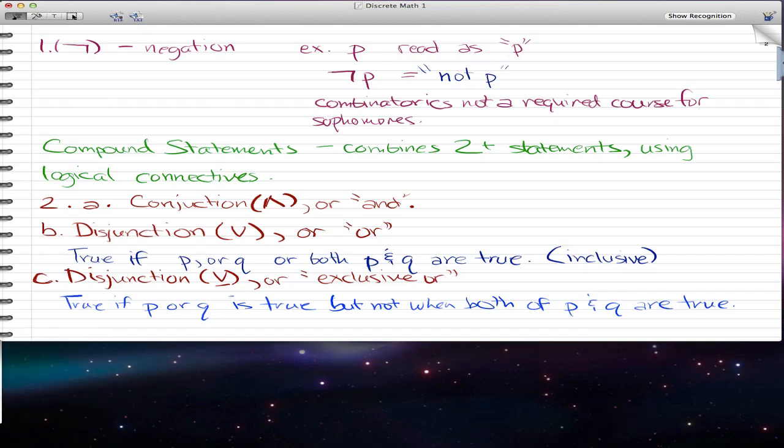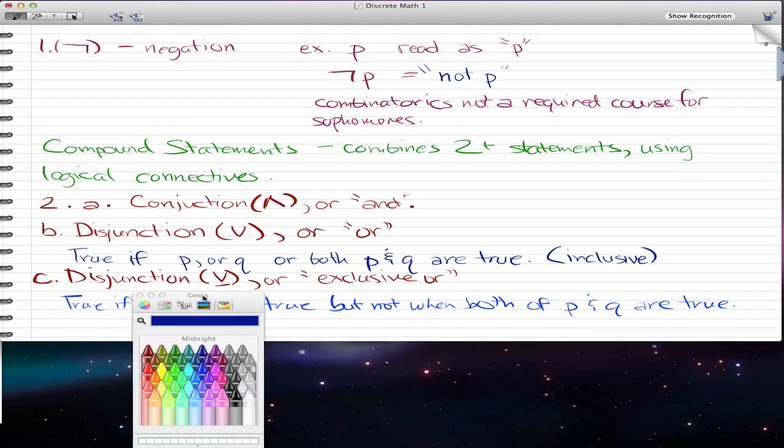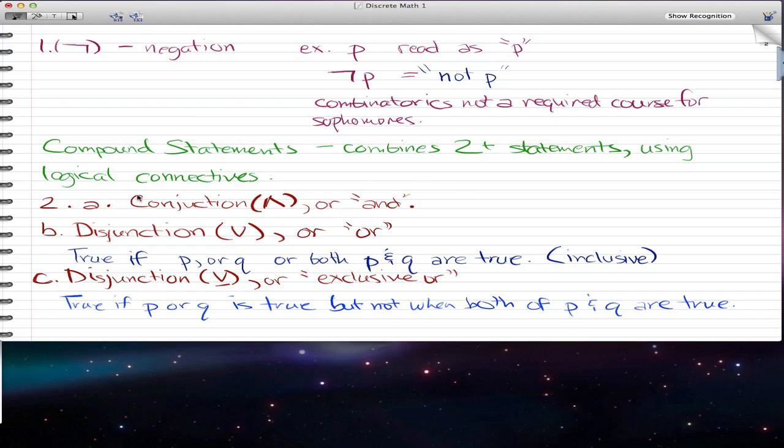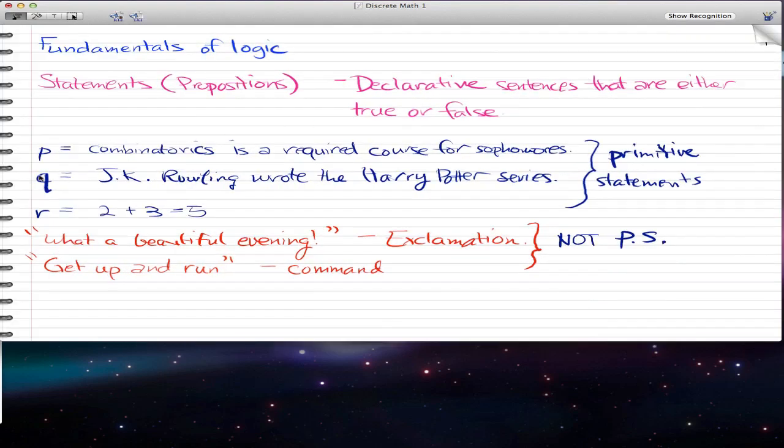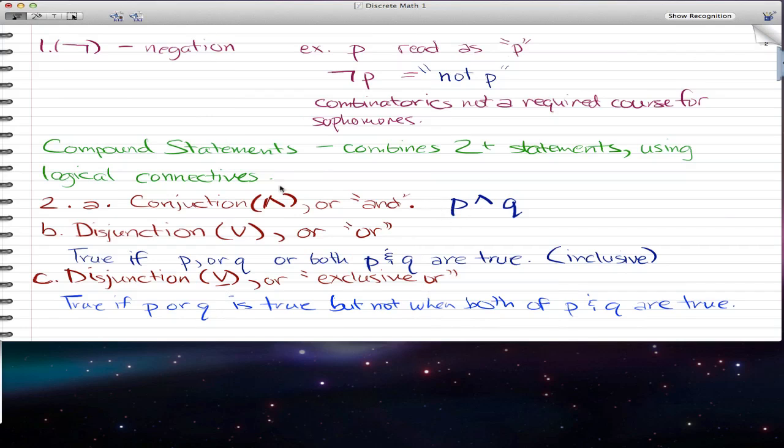Now compound statements are a little different. They're not as simple as negation, but they're still pretty simple. So the first one I want to go through is conjunction. The symbol for that is an upward caret, and it's read as AND. So if we put P caret Q, then that is read as P and Q. And referring back to the statements that we had, it will be read as combinatorics is a required course for sophomores and JK Rowling wrote the Harry Potter series.